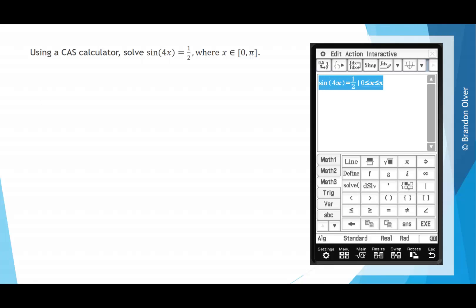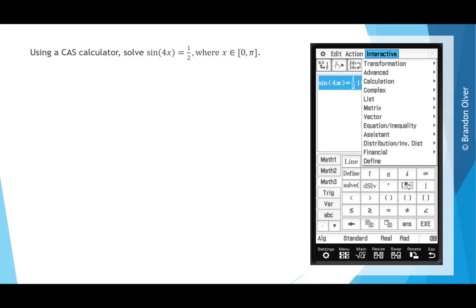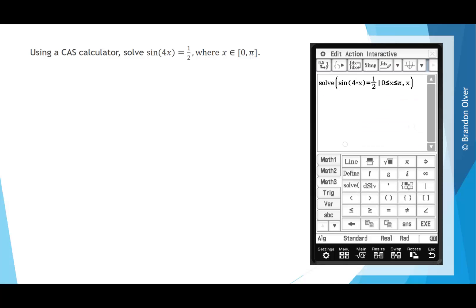If we highlight all of that, including the domain restriction, and go interactive, equation inequality, solve for x, that will give us the 4 solutions over this domain, and we can hit this arrow just to tab across so we can see all of those answers.